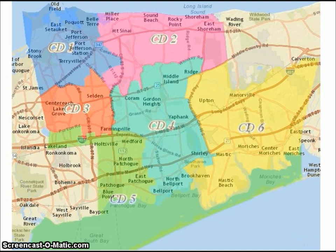Council District 1 contains the villages of Oldfield, Poquot, Beltair, and Port Jefferson. Council District 2 contains the village of Shoreham. Council District 3 contains the village of Lake Grove. Council District 4 contains the village of Bellport. Council District 5 contains the village of Patchogue. And Council District 6 contains the village of Mastic Beach.